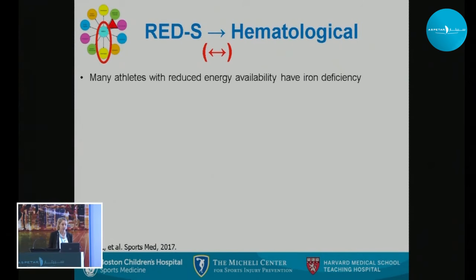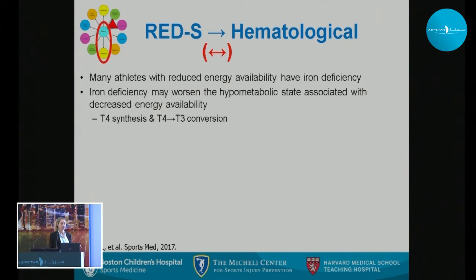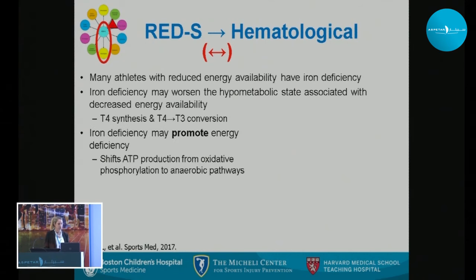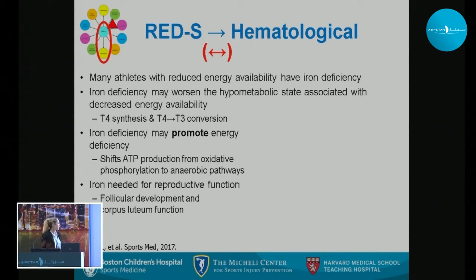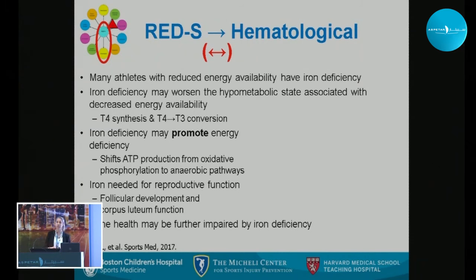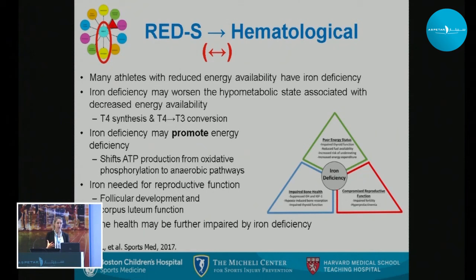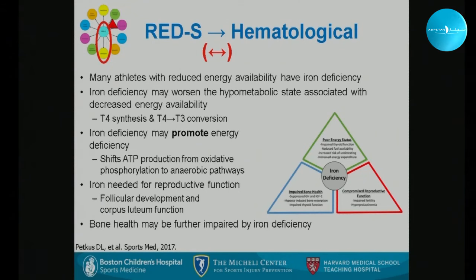Many athletes with reduced energy availability have iron deficiency. Iron deficiency can worsen the hypometabolic state, is important for T4 synthesis and T4-to-T3 conversion, and can promote energy deficiency by shifting ATP production from oxidative phosphorylation to anaerobic pathways. Iron is also needed for reproductive function — follicular development and corpus luteum function. Additionally, bone health may be further impaired by iron deficiency, suggesting yet another potential triad.